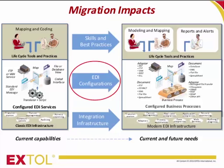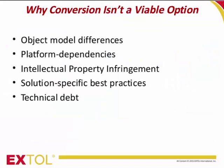Let's answer one question that might be the elephant in the room: why can't we just convert our legacy EDI configurations to corresponding assets in the new target system? The answer is no, for a number of reasons. First, conversion doesn't work even for objects with similar functions in the two systems — like maps and interfaces — because the semantics and representations of those objects differ greatly between EDI solutions. There might also be platform dependencies; if your legacy system took advantage of platform capabilities, there's no easy way to convert those dependencies to the new system.